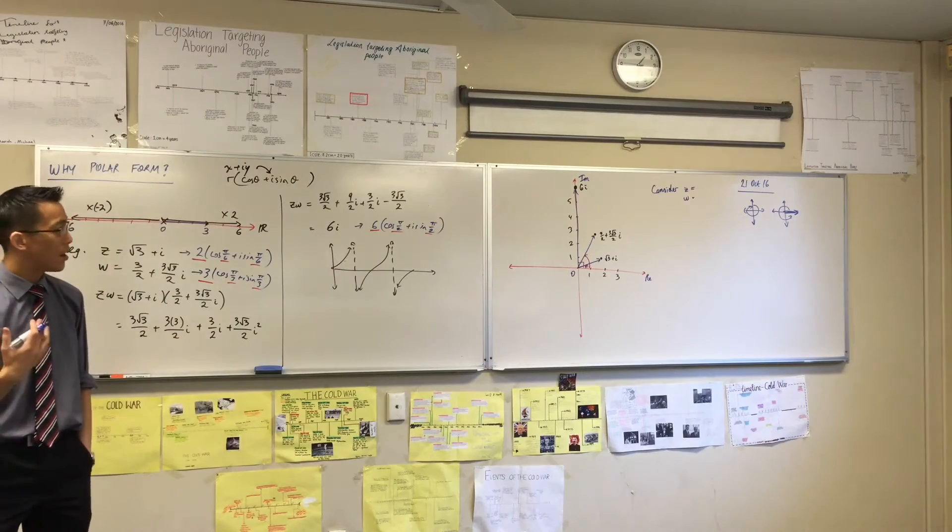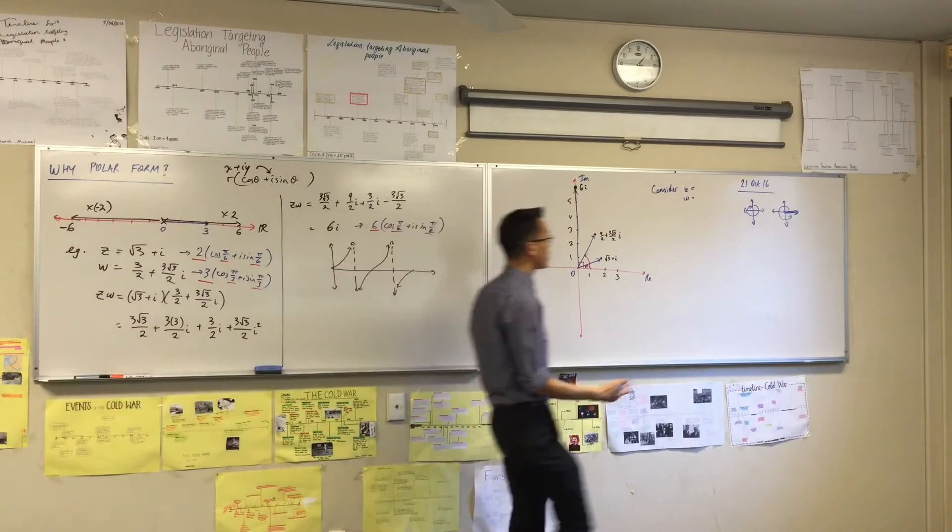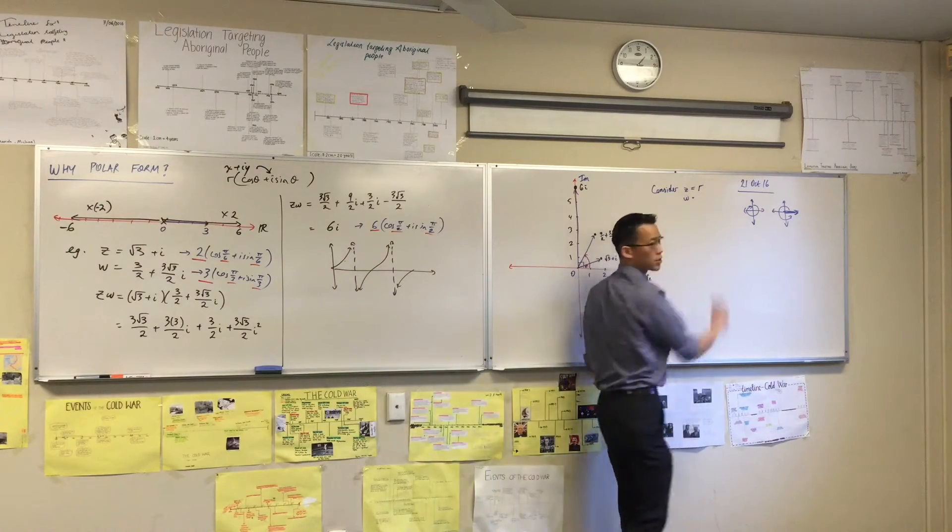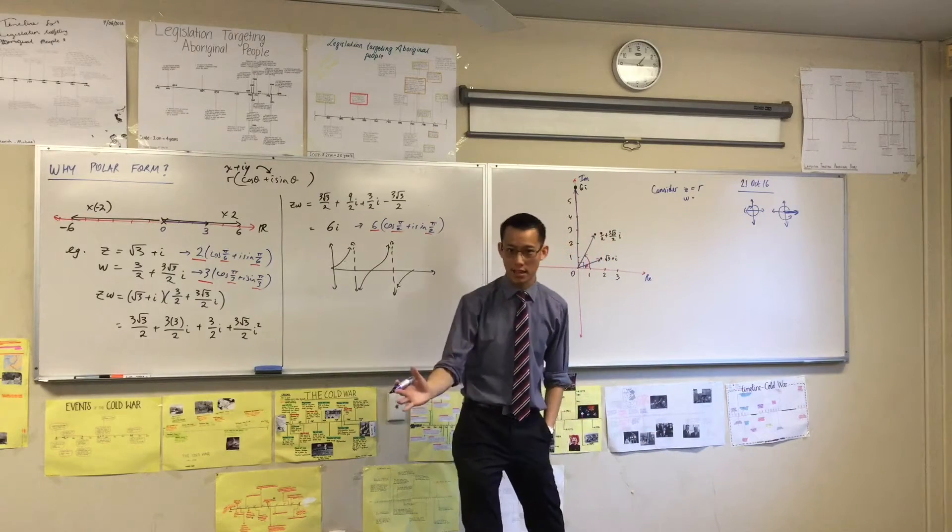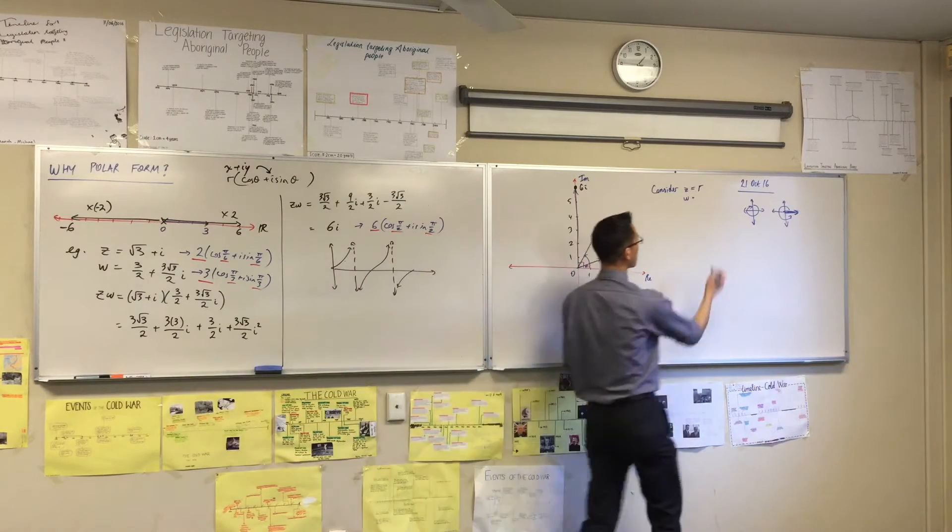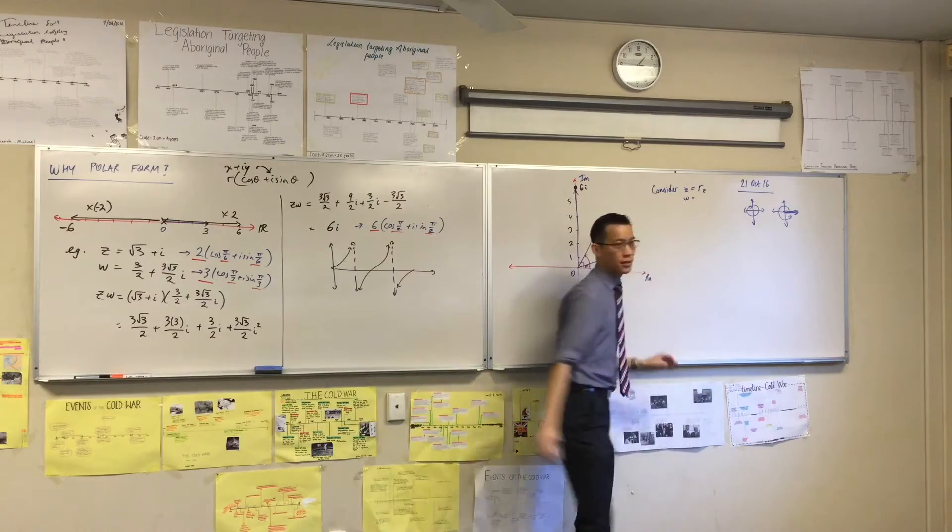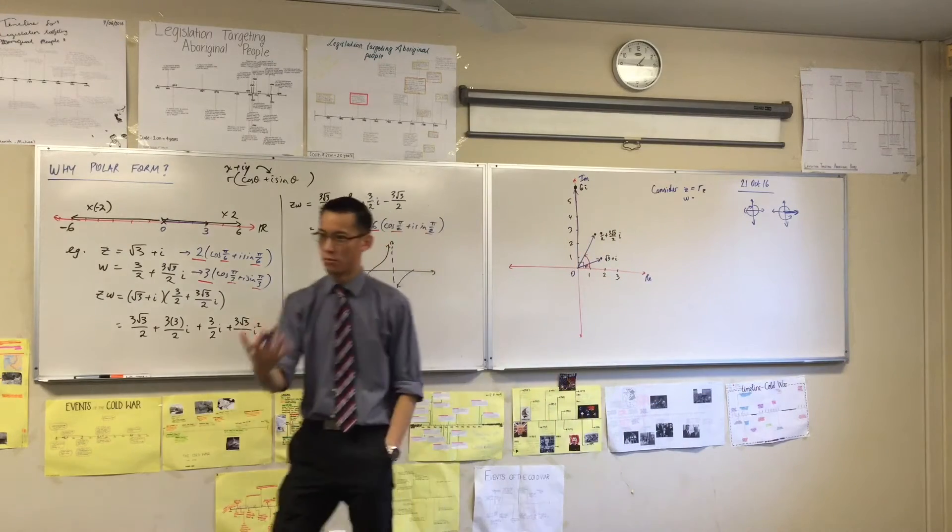So I'm just going to name a complex number. What's its modulus going to be? Its radius. Well, I want it to be anything. Anything, okay? So I'm just going to say, let's call the radius of this RZ, because that's the complex number.